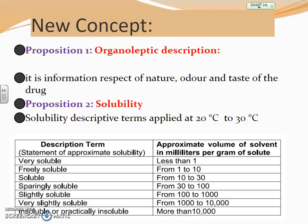Solubility depends on the solubility profile, which is assessed at 20 to 30 degrees Celsius. The solubility categories are: very soluble, freely soluble, soluble, sparingly soluble, slightly soluble, very slightly soluble, or practically insoluble. These are the solubility criteria given for a particular drug in the monograph, and accordingly the solubility result should comply with the official pharmacopoeia.